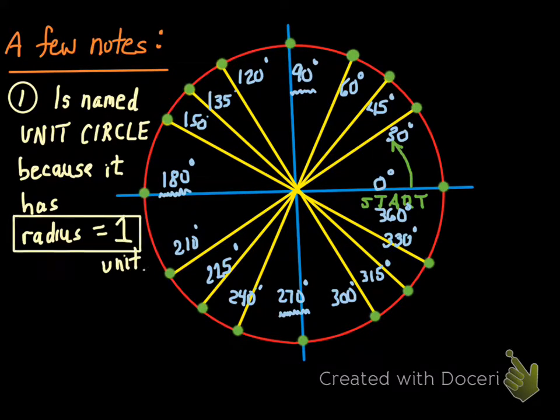So if you can imagine placing this on an xy coordinate grid, the radius equals one. That distance right there is one, and the center of this circle is placed on the origin of an xy coordinate grid: zero, zero.